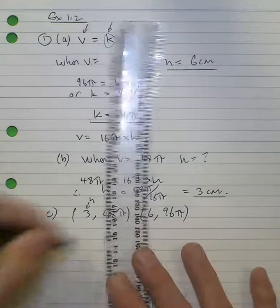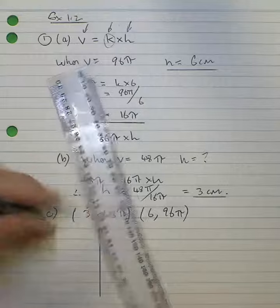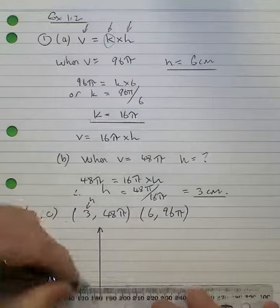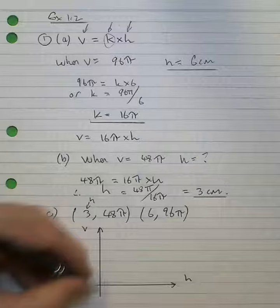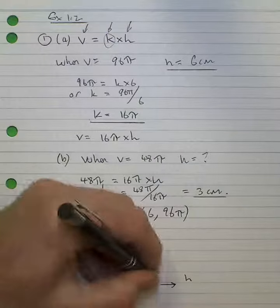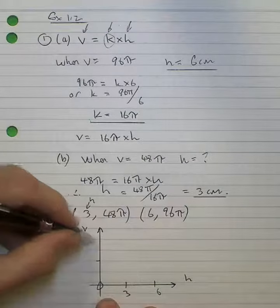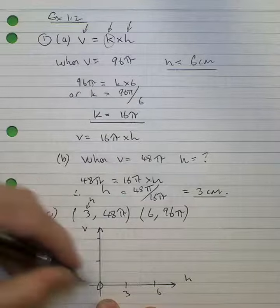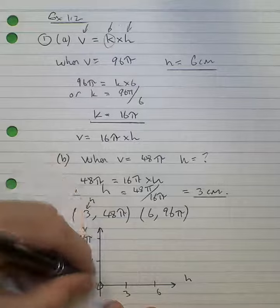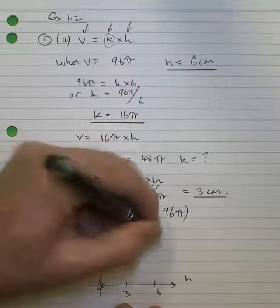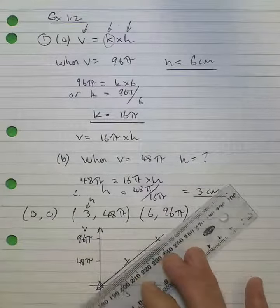Now to sketch a graph like that, we only have to have arbitrary units. So I'll scale the graph like so, volume and height, 3 and 6. And I'll just choose my rough units using the lines of my pad here, and that will be 48π and 96π. And my graph will look like so.